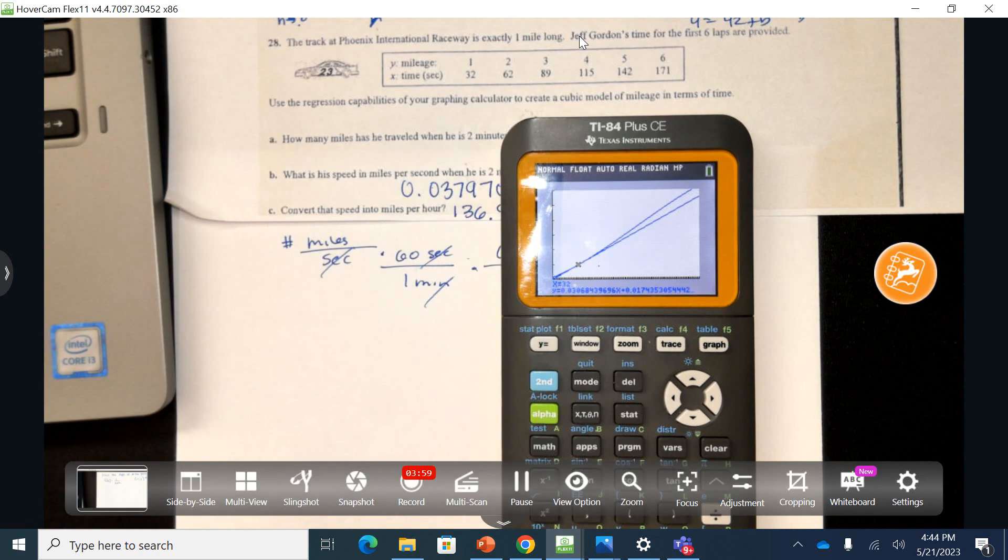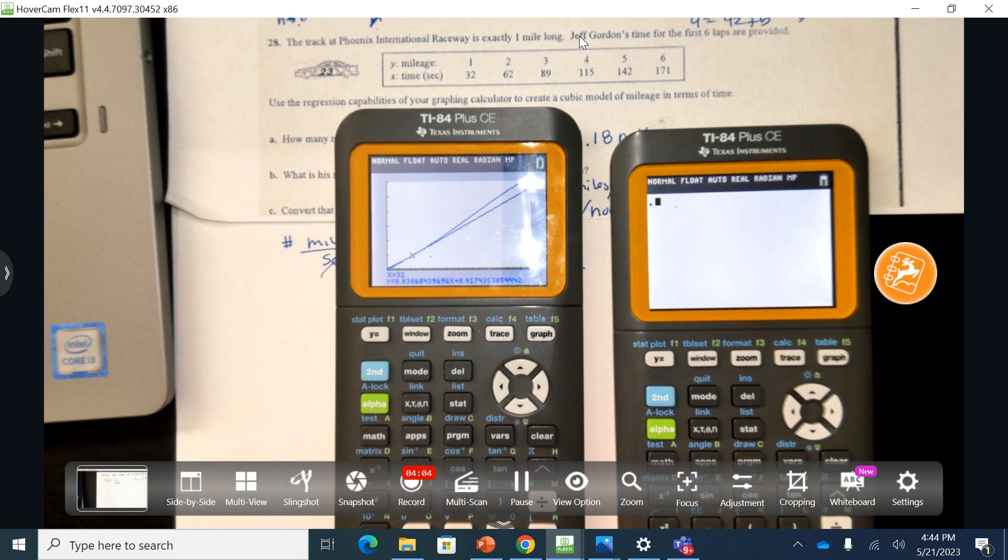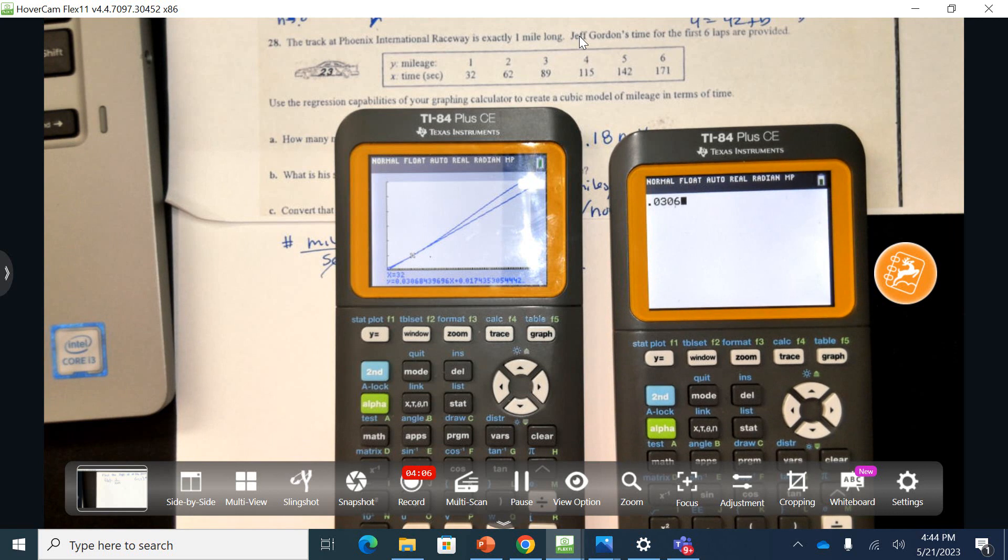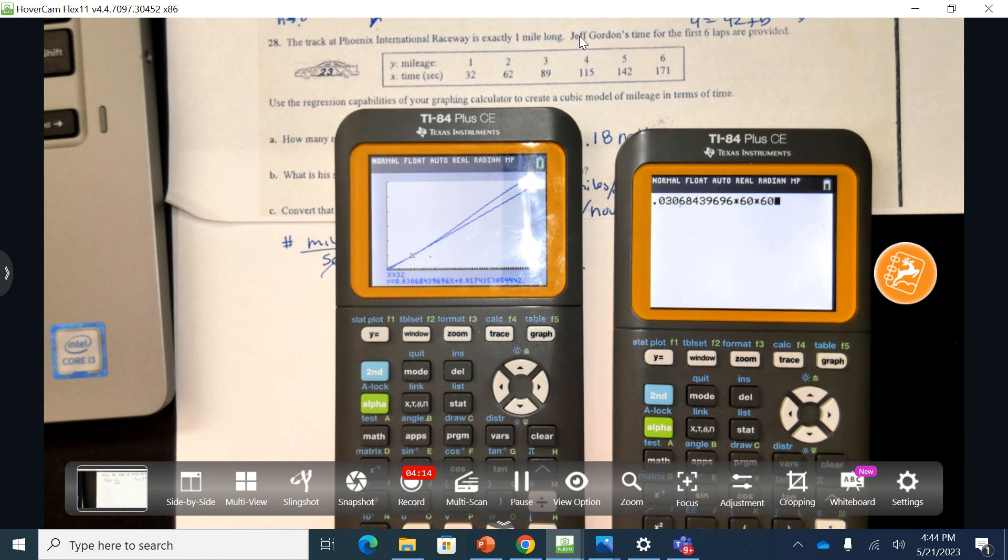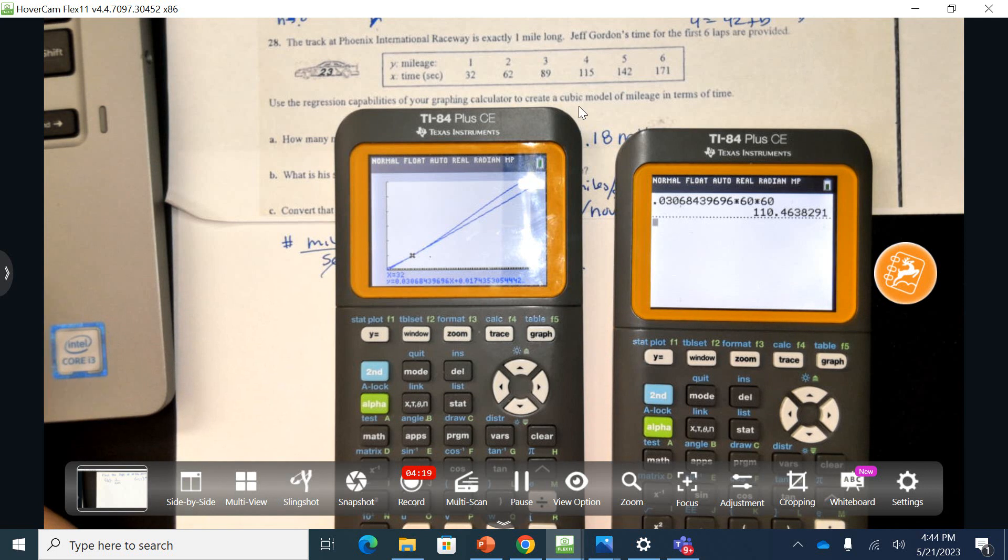So I need to take this exact value, and I'm going to be lazy right now. I know I have a second calculator. I'm going to type this in, 0.03068439696, and I'm going to take it times 60 and times 60 again, just like I showed you in the last one, to end up with 110.46 miles per hour.